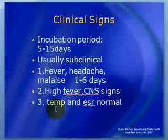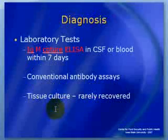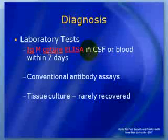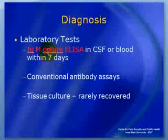Confirmation of a suspected case of Japanese encephalitis requires laboratory diagnosis. The main method is IgM capture ELISA in CSF or blood, which detects specific IgM antibodies in cerebrospinal fluid within 7 days of onset of disease in almost all patients. Other conventional antibody assays are also used, and tissue culture methods are available but rarely employed.